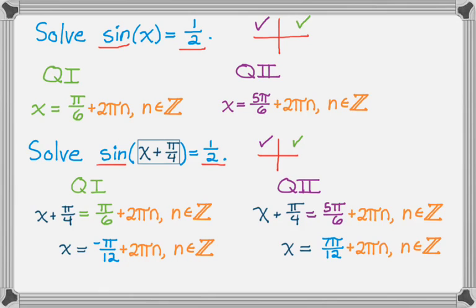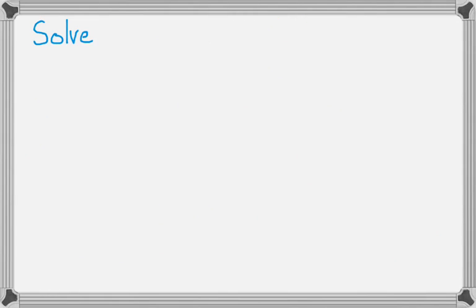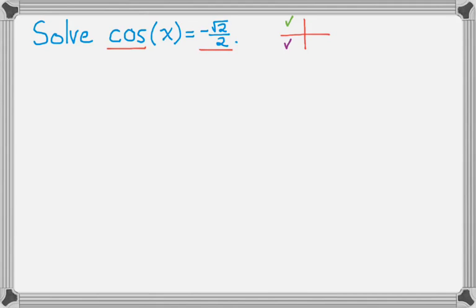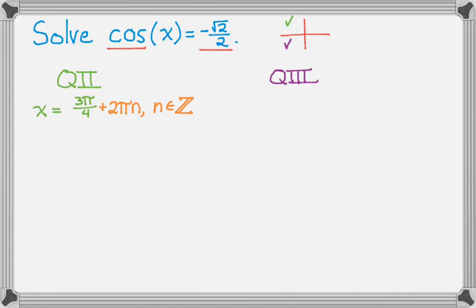It does come down to knowing your unit circle angles. Now cosine is negative, so that can be quadrants 2 and 3. In quadrant 2, the angle that has a cosine of negative radical 2 over 2 is a pi over 4 type angle, so 3 pi over 4 plus 2 pi n. In quadrant 3, it's again a pi over 4 type angle, so that's 5 pi over 4, plus 2 pi n.